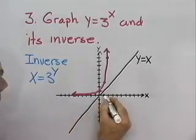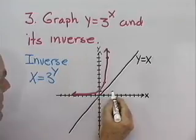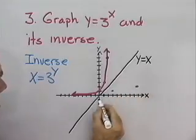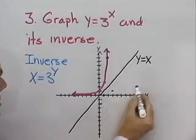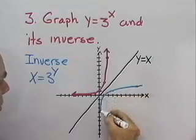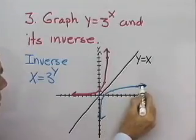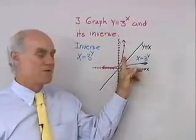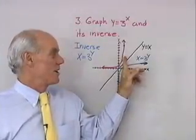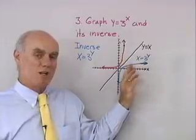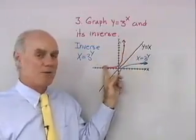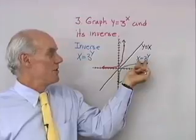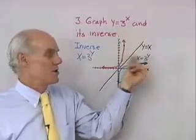When y is 1, x will be 3. When y is 2, x will be 9. When y is negative 1, x will be 1 third; 1 ninth, and so on. All those ordered pairs have their coordinates reversed. So here is the graph of x equal 3 to the y, which is the inverse function for y equal 3 to the x. Graphing a function and its inverse is easy if we know the graph of the function — we simply reflect it about the line y equal x. Finding the equation of the inverse is also easy — we simply exchange x and y.